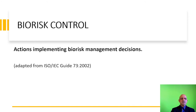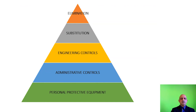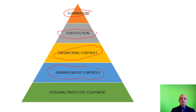Bio-risk controls focus on actions implementing bio-risk management decisions, and we will focus on this in a specific lecture on controls. These are the five controls: elimination, substitution, engineering controls, administrative controls, and personal protective equipment. I have touched upon these briefly to give you a mental note of what we will be discussing in the next lecture.